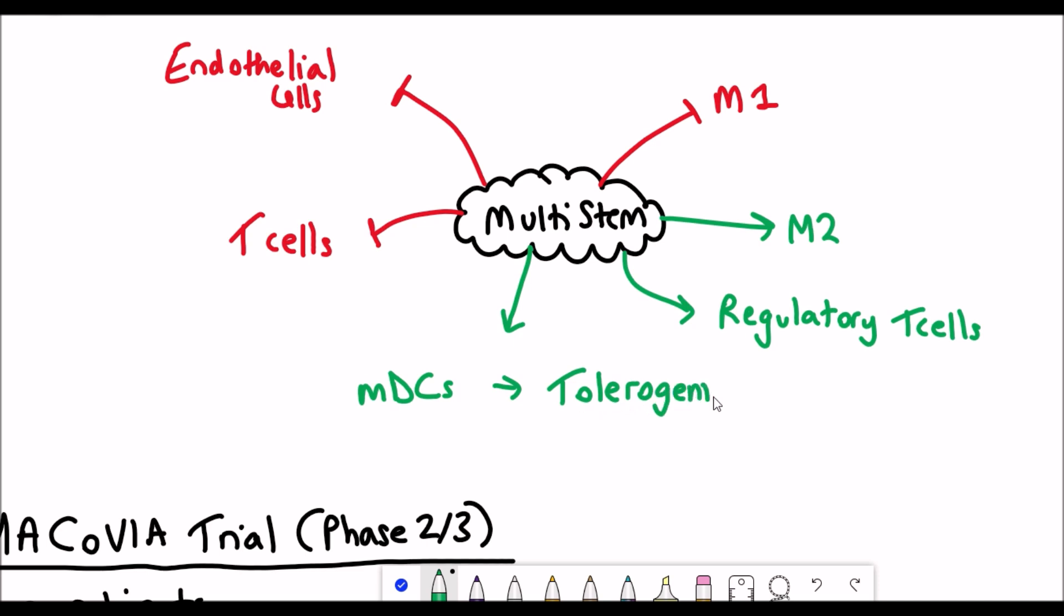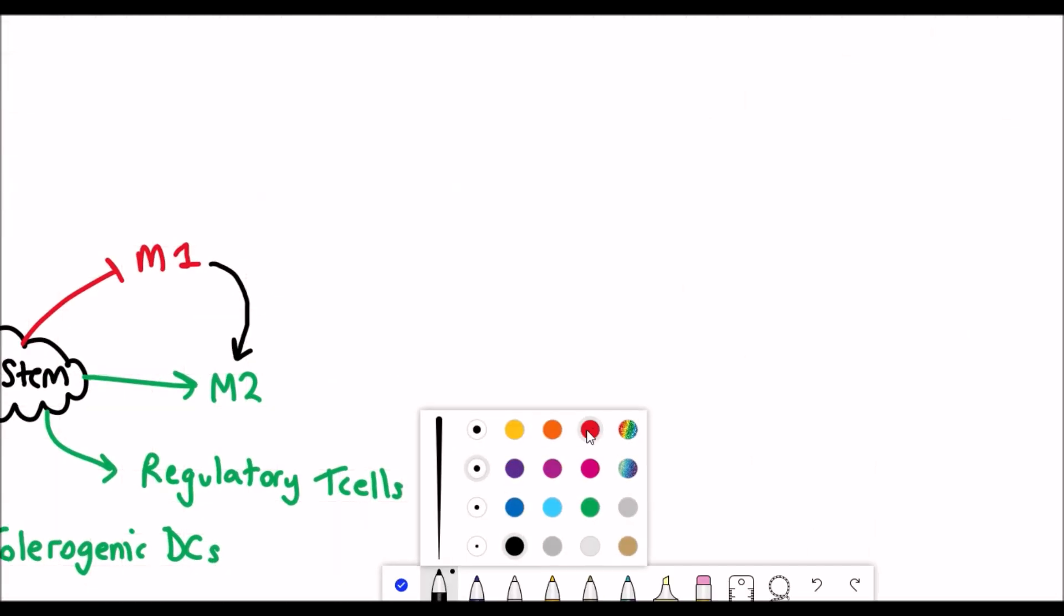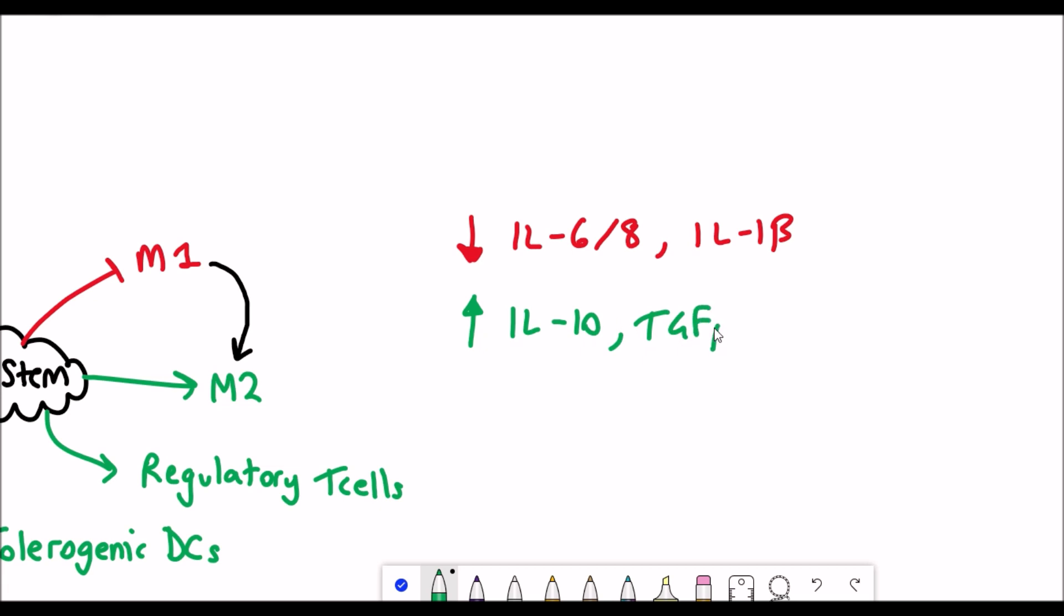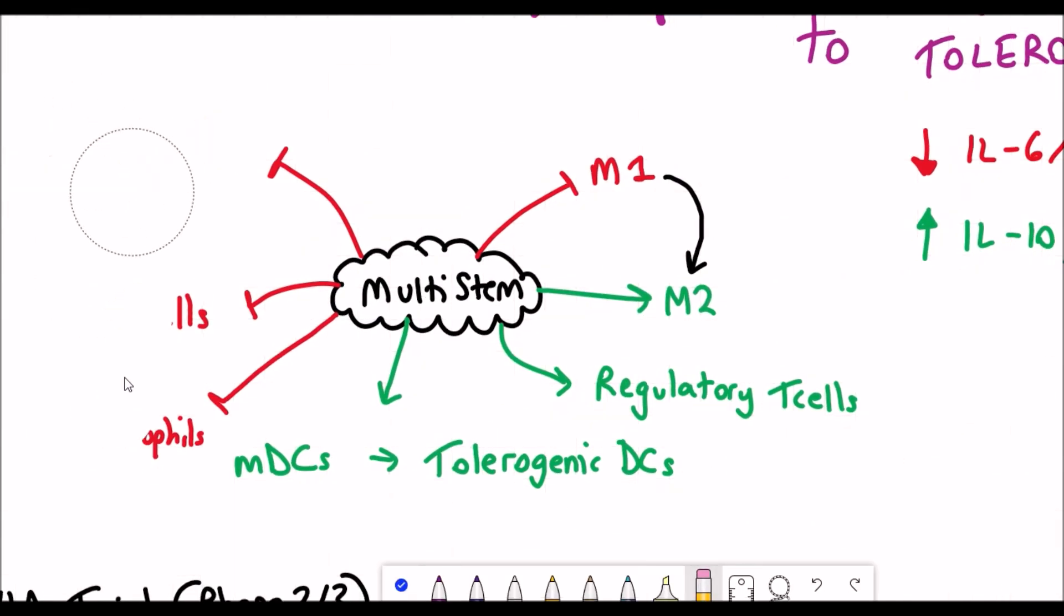In the webinar, Eric talks about the multiple ways Multistem cells modulate the immune system. Don't worry if you didn't understand those different cells. The key point is that from preclinical studies and other data, they generally see a reduction in pro-inflammatory factors such as interleukin-6 and -8 and interleukin-1 beta, and an increase of interleukin-10, TGF beta, and interleukin-4. What they propose is to tip the balance of the immune system from a hyper-inflammatory state to a tolerogenic one.